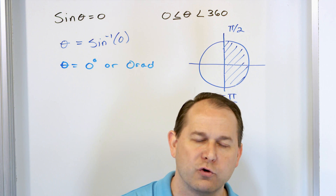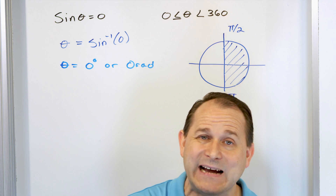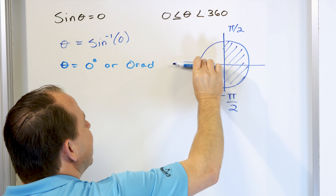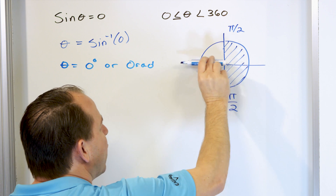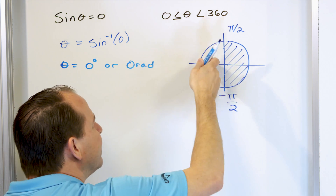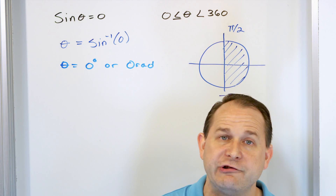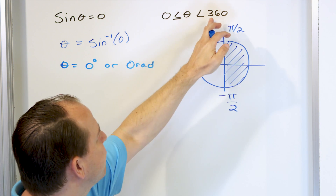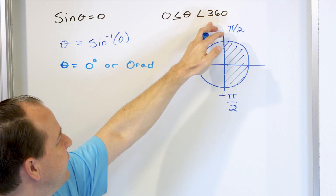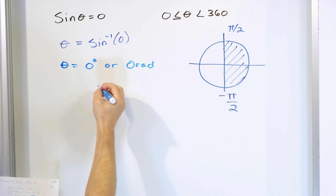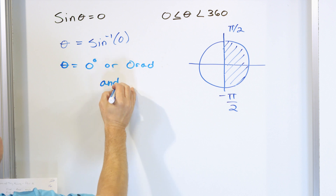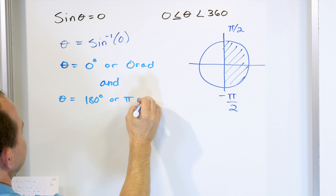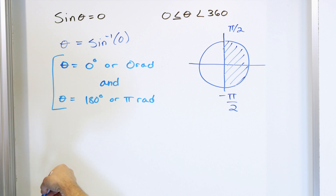However, are there any other angles around the unit circle that also give the sine of that angle as zero? If you look on the other side of the unit circle at pi, the projection onto the y-axis there is also zero. So it's outside the fundamental range of the arc sine function — the calculator will never give you pi as an answer. But our equation says give me all angles from zero to 360 that satisfy this, so theta can also be 180 degrees or pi radians.